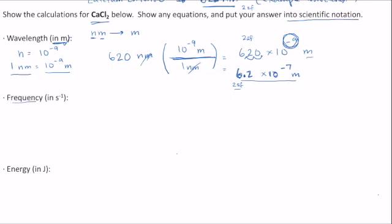Now to convert this to frequency, let's add some symbols. Wavelength uses the symbol lambda — that's the upside-down y, the Greek alphabet. So this is lambda in meters, which are the units for wavelength. Frequency uses the symbol nu — that's like a cursive v, a Greek symbol. The units for frequency are s⁻¹, or 1 over s, or just per second.